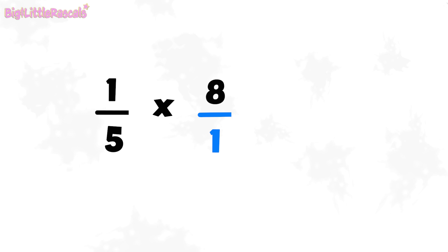First, let's multiply the top numbers first. One multiplied by eight equals to eight. Next, let's multiply the bottom numbers. Five multiplied by one equals to five. So, the result is this.